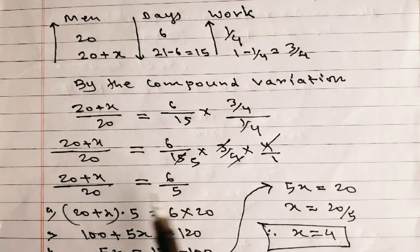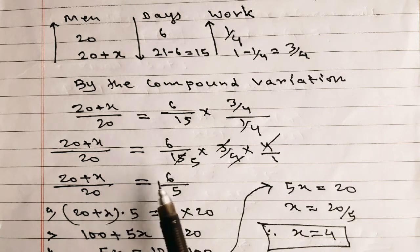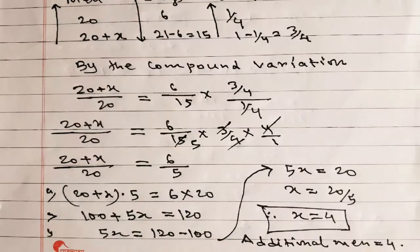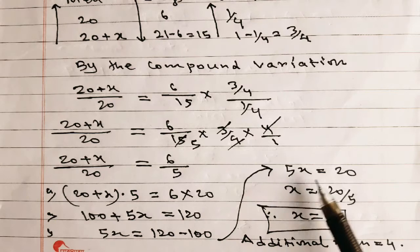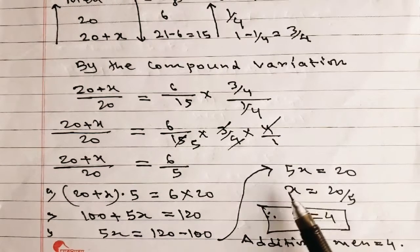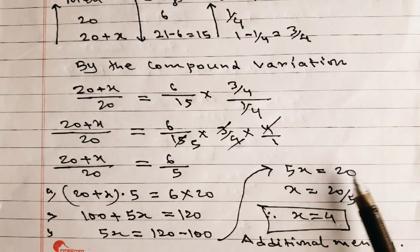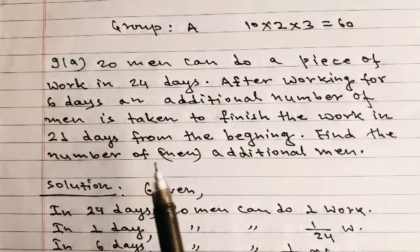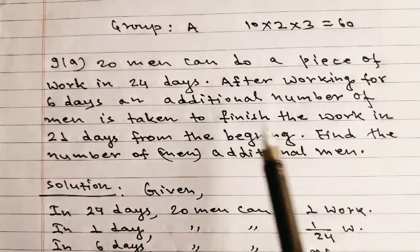So (20 + x) / 20 = 6/5. Cross multiplying: 5 × (20 + x) = 6 × 20, which gives 100 + 5x = 120, therefore 5x = 20, so x = 4. Therefore, 4 additional men are needed.